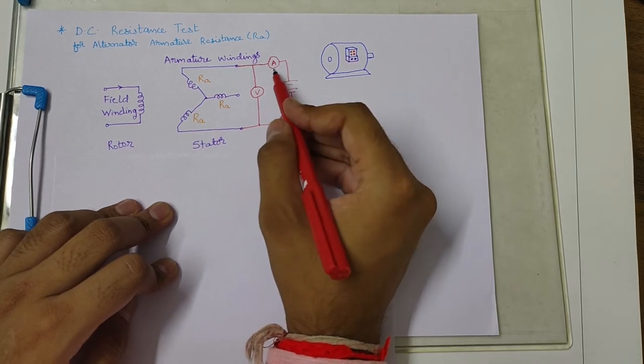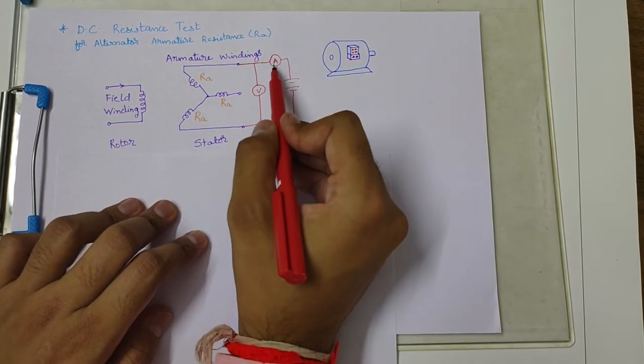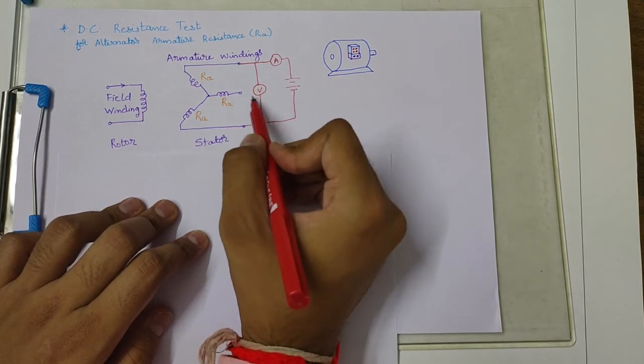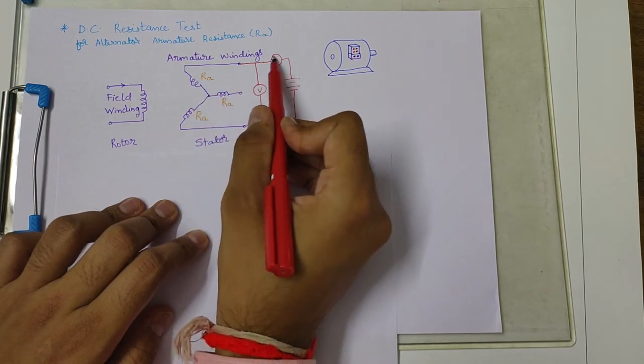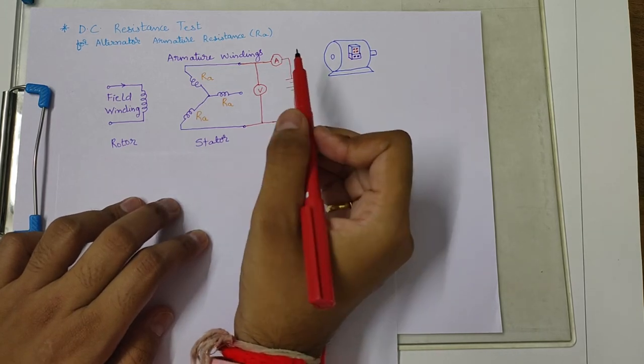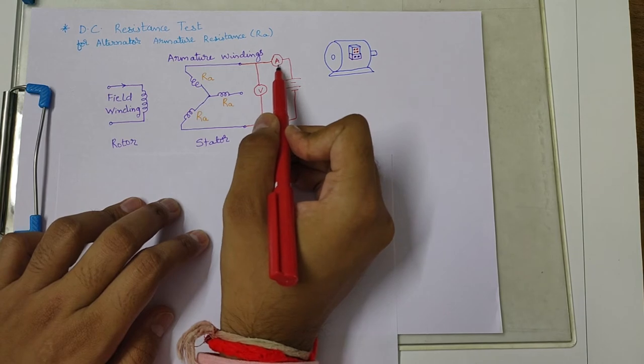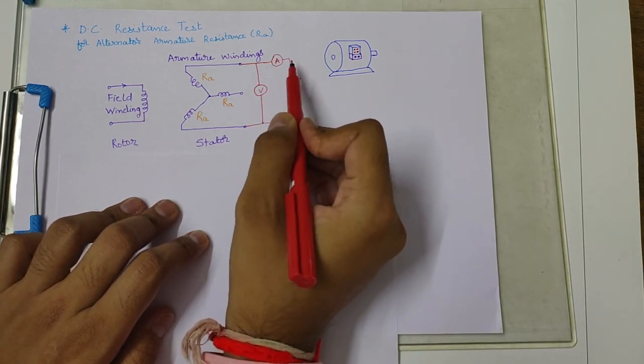Now the location of the ammeter here is very important, because if you connect this ammeter on the left side of the voltmeter, then this voltmeter will measure the voltage drop across these resistances as well as the voltage drop across the ammeter, which is very less but still contributes to some drop in voltage due to the resistance of the ammeter coils. So usually the ammeter is connected on the supply side of the voltmeter.